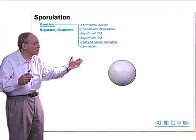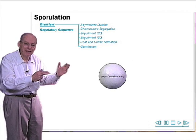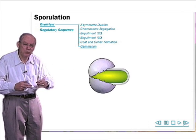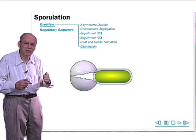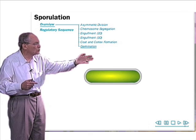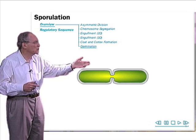The mother cell, having done her job, lyses and liberates the mature spore, which can remain inert for many years. But on a moment's notice, when good conditions return, it can crack open like an egg and give rise to a cell that can resume vegetative growth and binary fission.